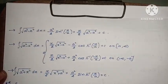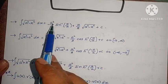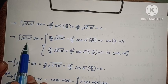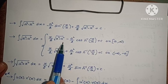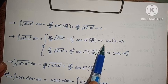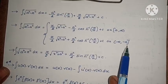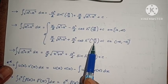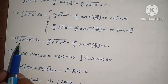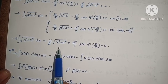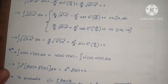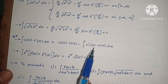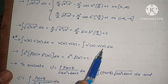Integral of root of (a²-x²) dx equals (a²/2) sin inverse (x/a) plus (x/2) root of (a²-x²) plus c. Integral of root of (x²-a²) dx equals (x/2) root of (x²-a²) minus (a²/2) cosh inverse (x/a) plus c, for interval a to infinity. Integral of root of (a²+x²) dx equals (x/2) root of (x²+a²) plus (a²/2) sinh inverse (x/a) plus c. Integration by parts: Integral of u(x) v'(x) dx equals u(x) v(x) minus integral of u'(x) v(x) dx. This formula is used in many problems and is very important.